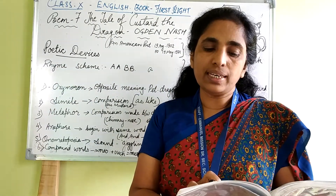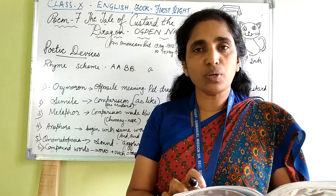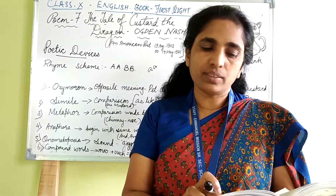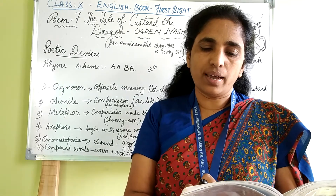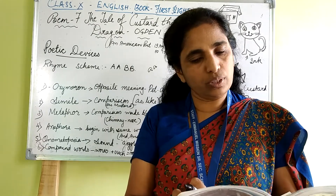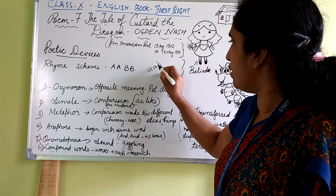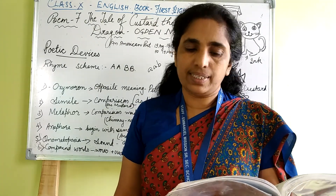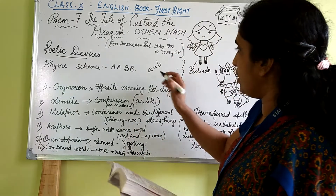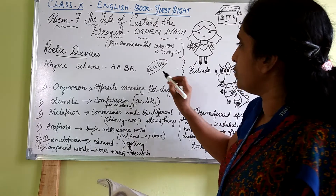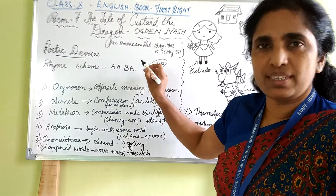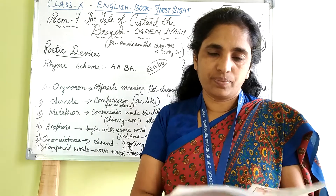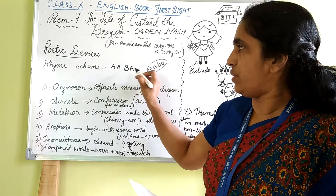The next line: 'with a little black kitten and a little grey mouse.' House and mouse have the same sound, so again we give A. Next is the third line: 'and a little yellow dog and a little red wagon.' It is different from mouse or house, so we give B. The fourth line ends with dragon — wagon and dragon are the same, so again B. This gives us the AABB rhyme scheme, which continues through all the stanzas.